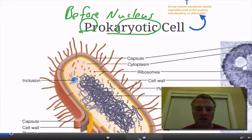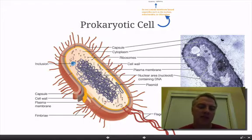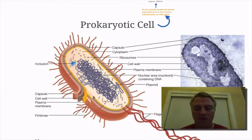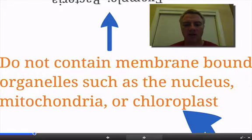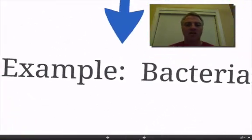If you'll notice in this picture here, there is not a nucleus. They do have DNA, but they don't have a nucleus. They have what we call a nucleoid region — just a little area inside them that contains their DNA. By definition, a prokaryotic cell does not contain membrane-bound organelles such as the nucleus, the mitochondria, chloroplast, or any other organelles found in cells. Organelles are these tiny little structures that do all the functions of the cell, and prokaryotic cells don't have any of these organelles.